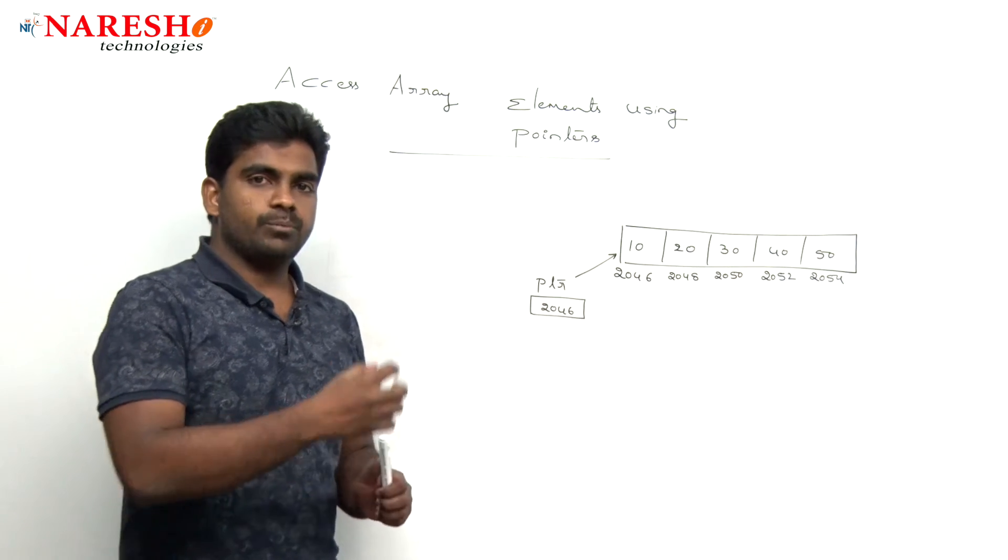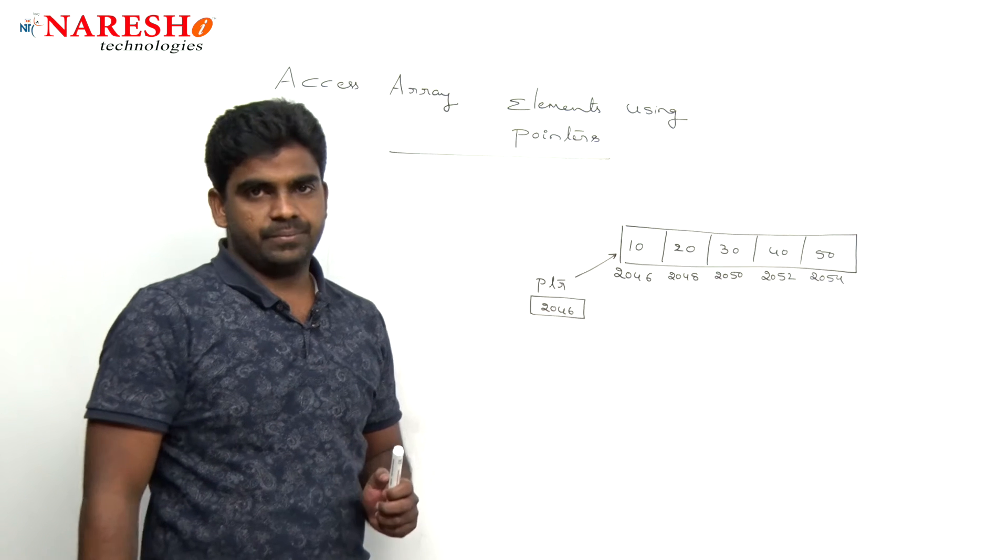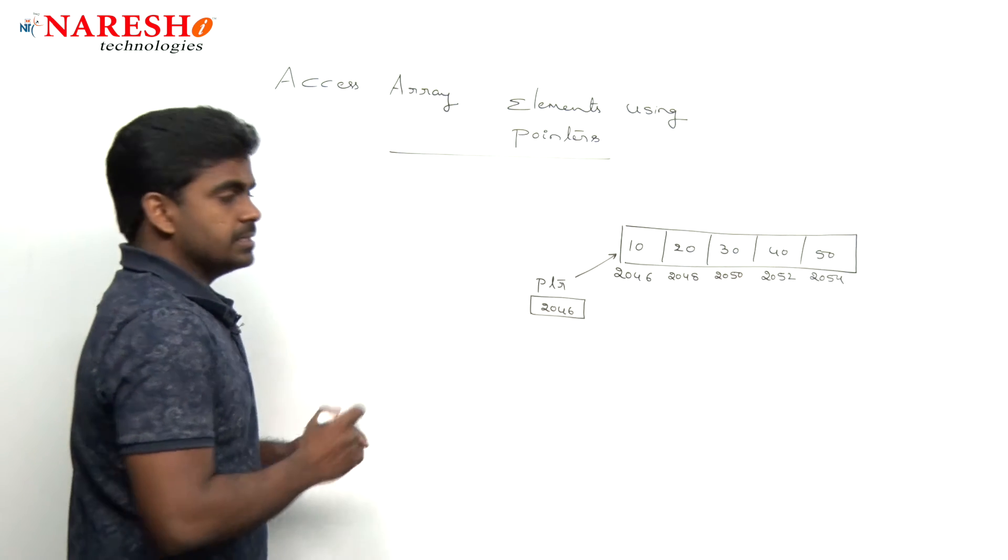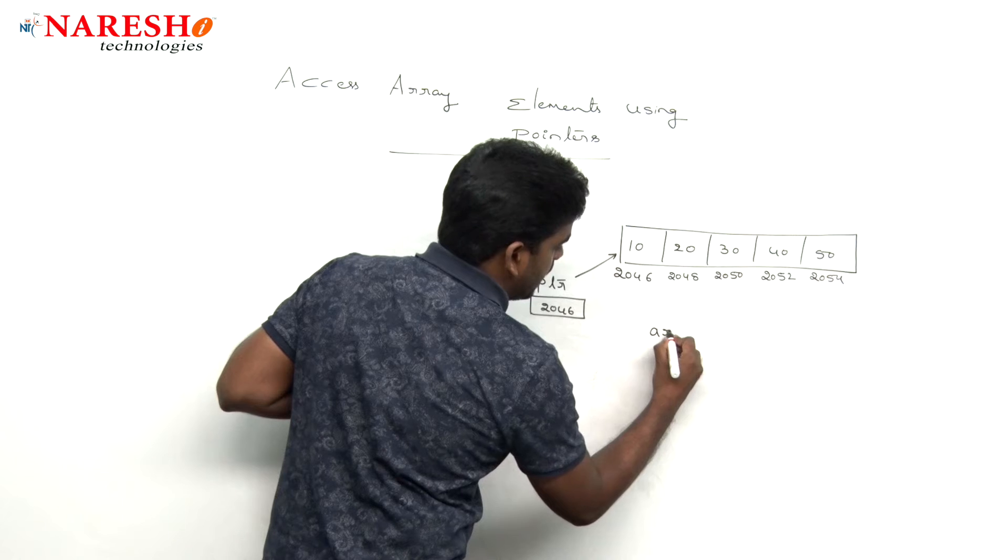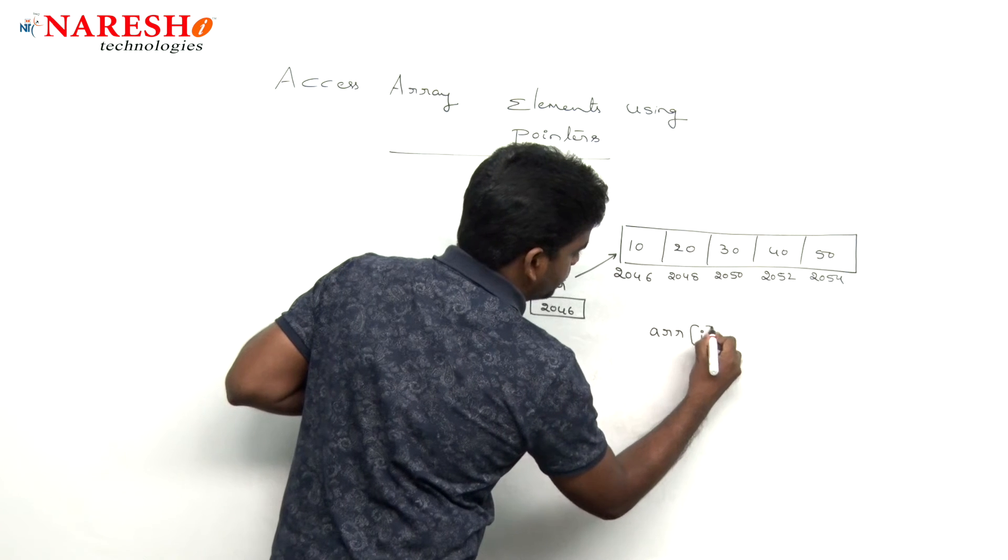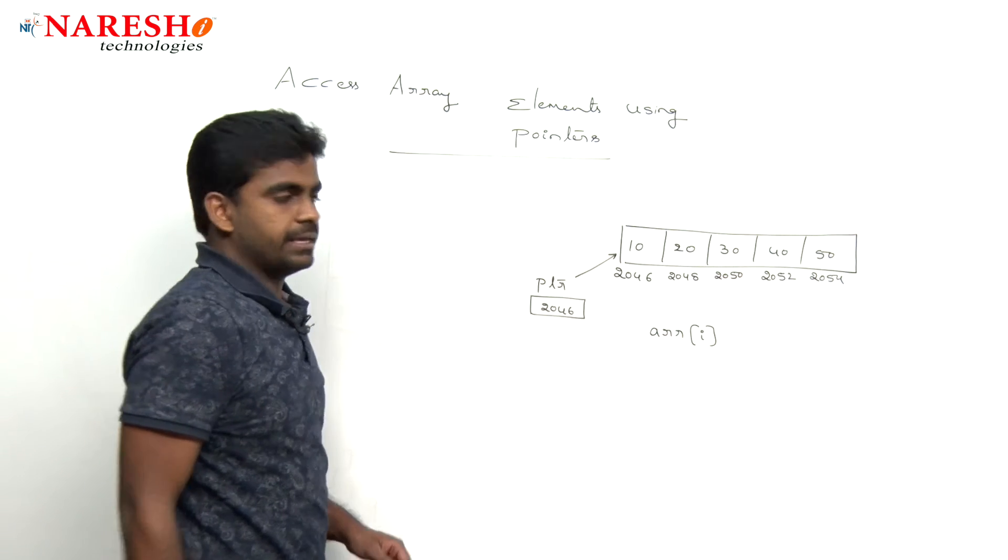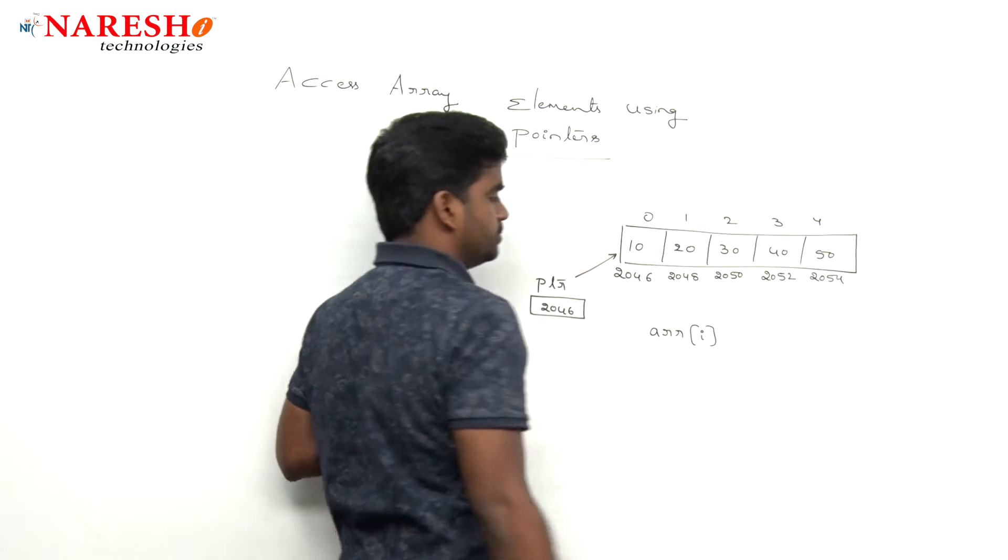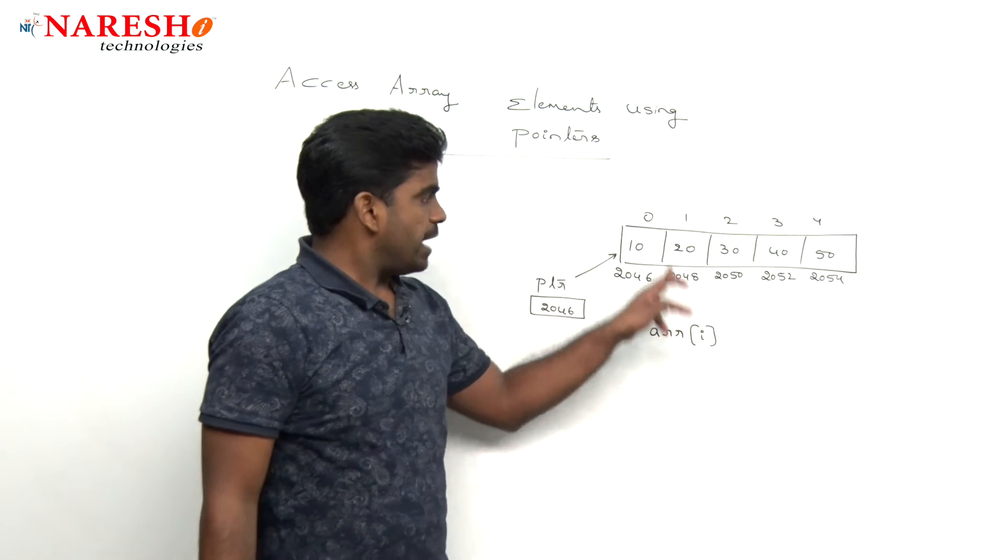How can we process the elements of that array? Generally we are writing ARR of i. Suppose the index is 0, 1, 2, 3, 4. ARR of i means what? Here ARR is pointing to this location.